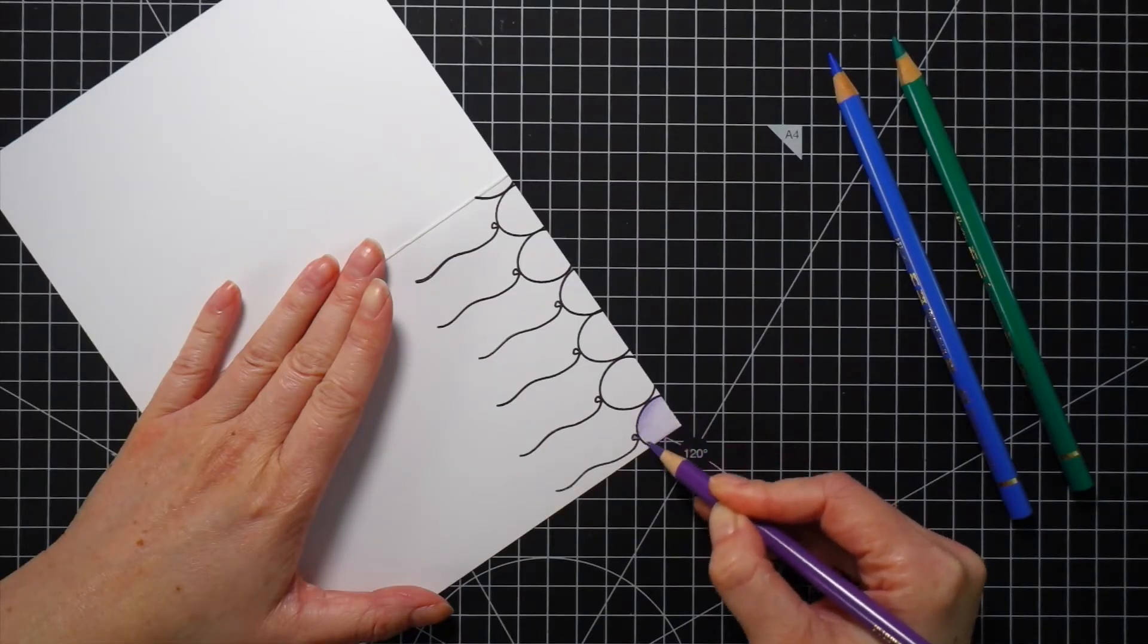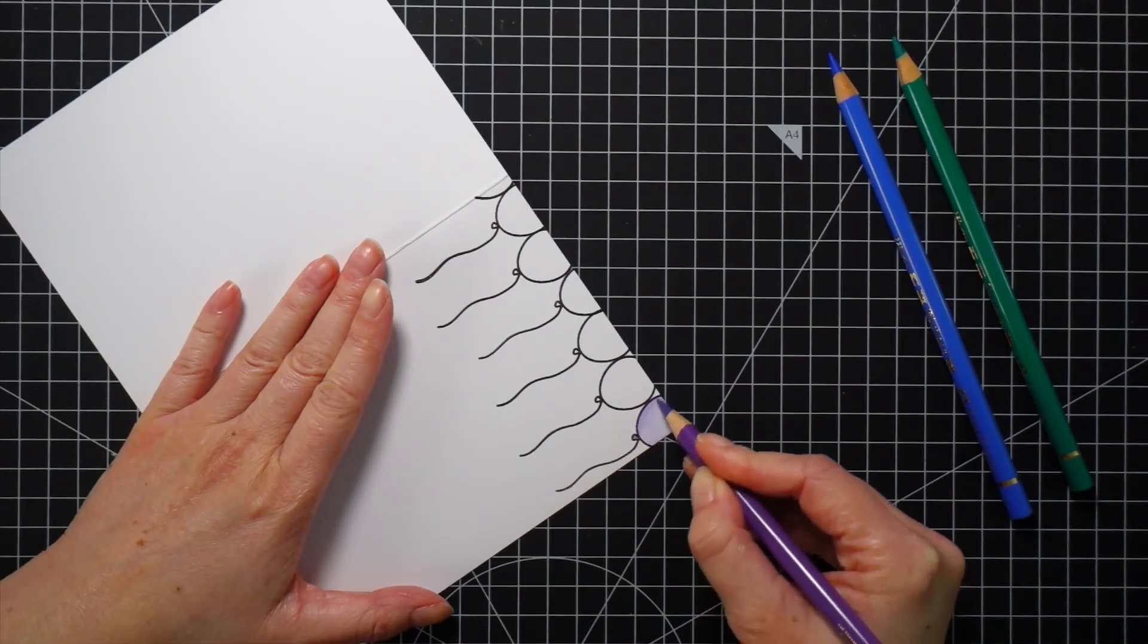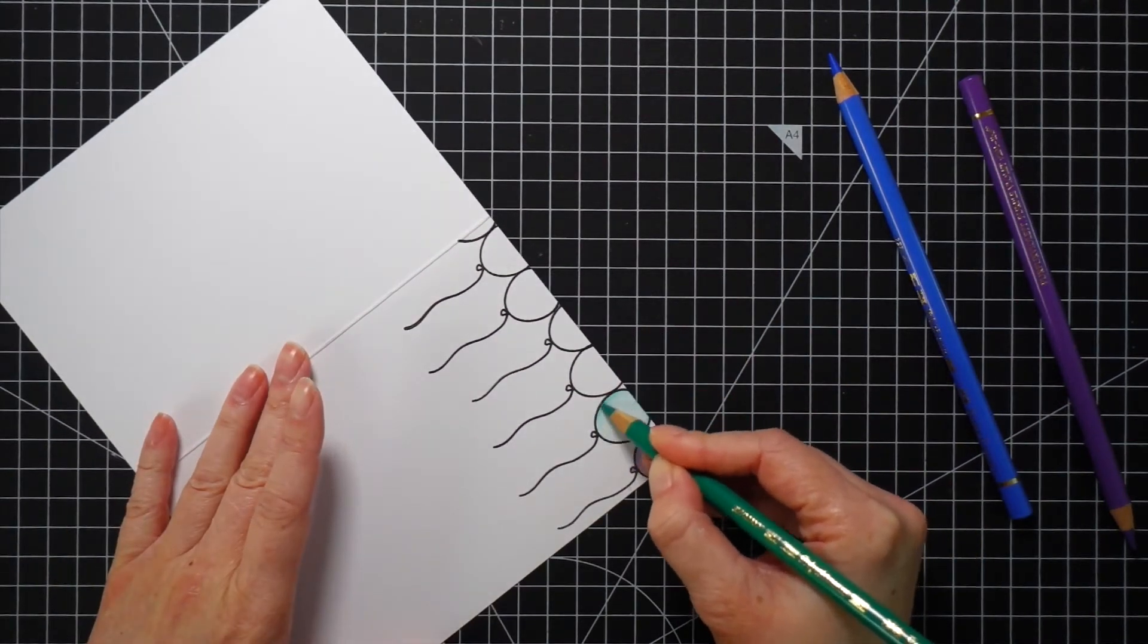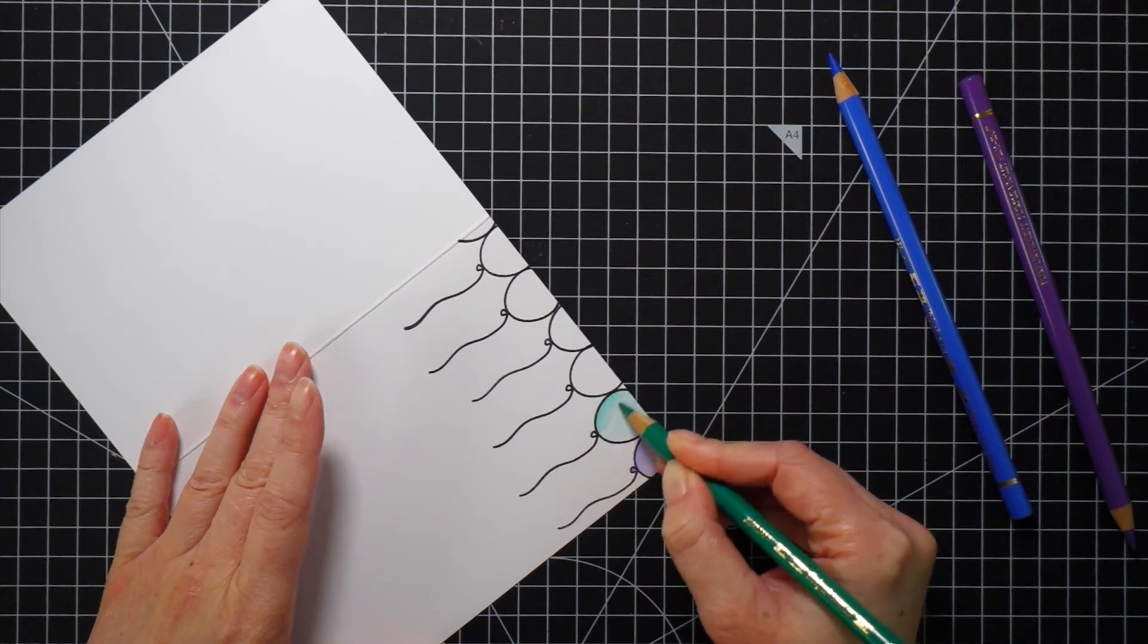To color them I picked three different colors. I only picked one shade of each color and quickly colored the balloons. I really did not want to do any shading. That would be just too much hassle for me.